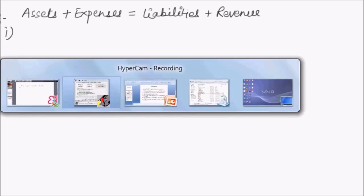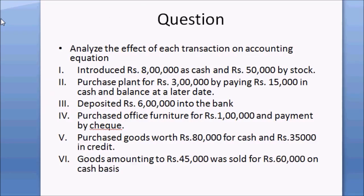The first transaction says: introduce rupees 8 lakhs as cash and rupees 50,000 by stock. We notice there are two accounts involved — cash and stock — and one more account, capital, which is also involved since cash and stock have been introduced to start a business.